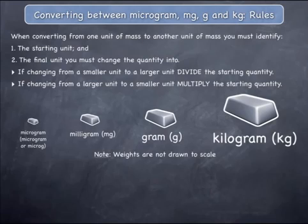To clarify this, consider the units of mass ordered from smallest to largest as you move from left to right. Each unit is 1000 times larger than the unit immediately to its left.